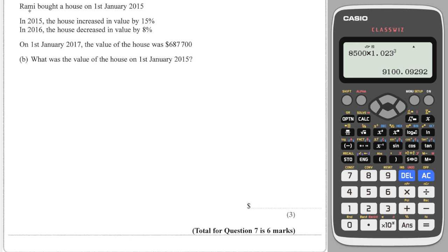Next question: Rammy bought a house on January 1st, 2015. The house increased in value by 15%, then decreased in value by 8%. On January 1st, 2017, the value was $687,700. Work out how much it was beforehand. We started with some amount, then increased it by 15%.